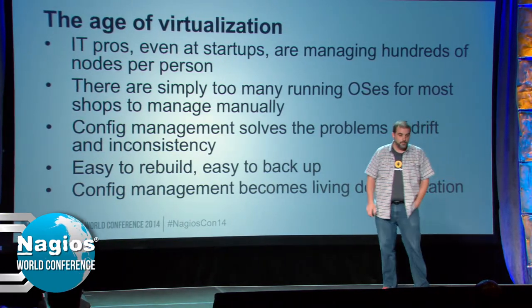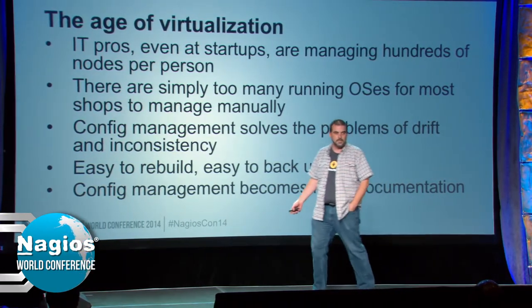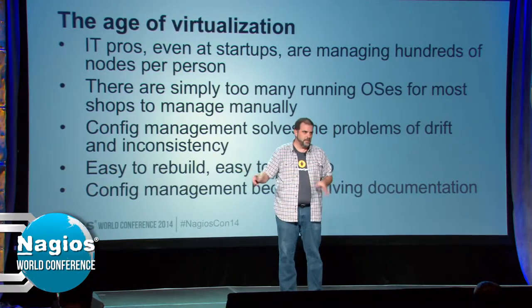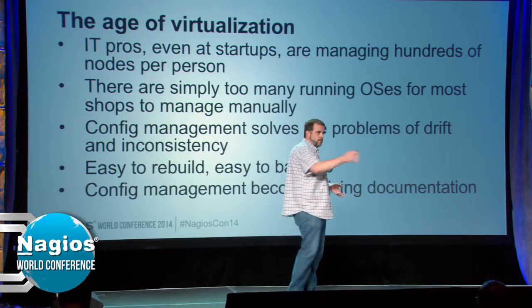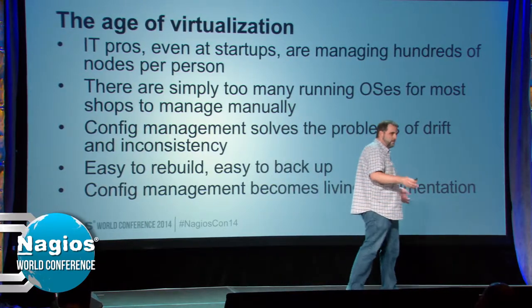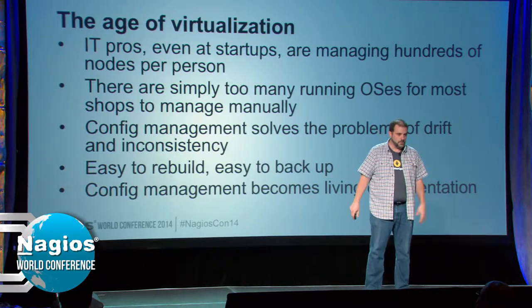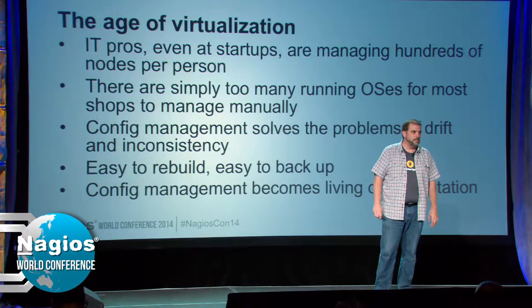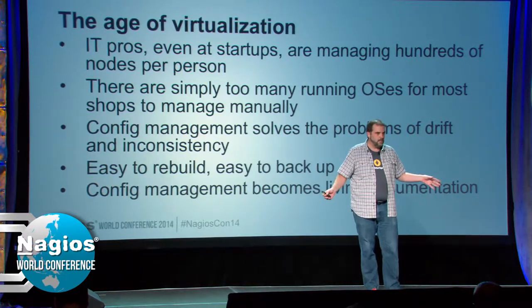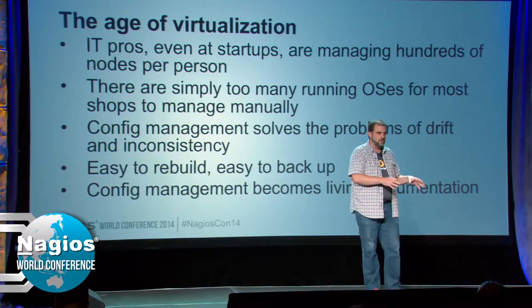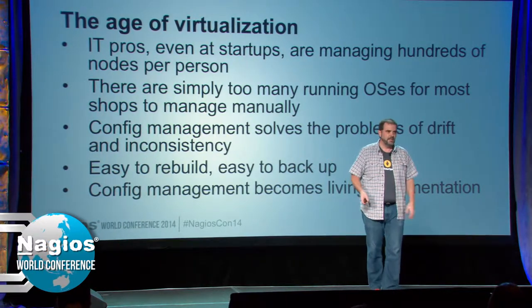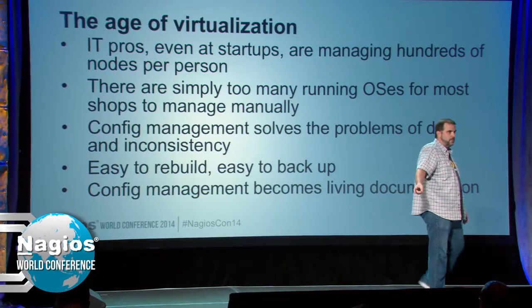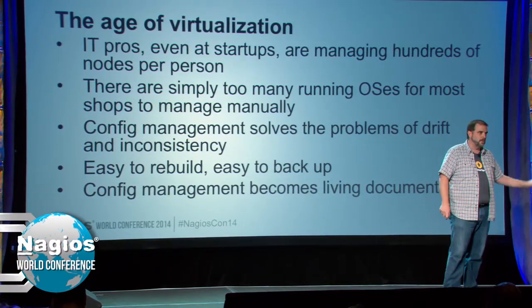It also solves configuration drift and inconsistency, because you don't have to remember every single place that config goes. Your clients are checking in and grabbing the configs themselves. You push a change to your web servers and you know it's going to reach all of them. It makes systems easier to build and easier to back up — unless you have proprietary data at rest, you don't need to back it up. It's easier to rebuild, re-image, and re-provision with your config management system.